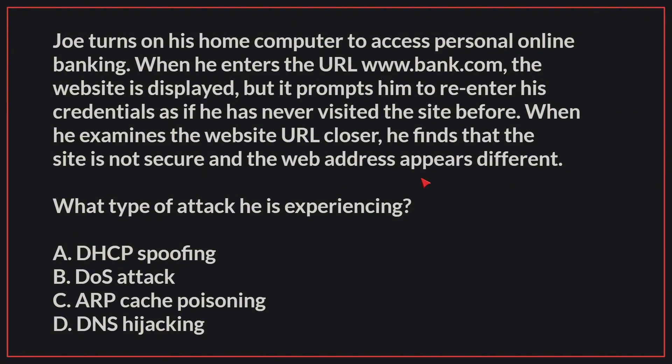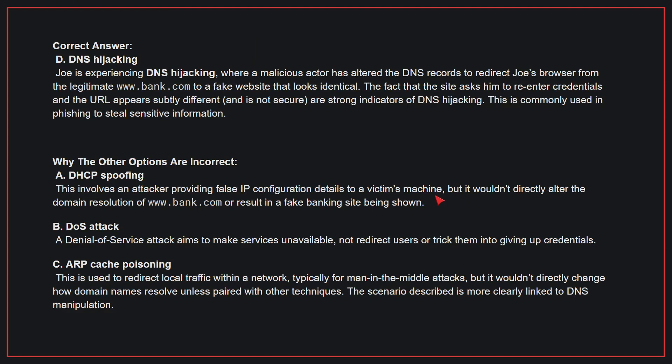The correct answer is D: DNS hijacking. Joe is experiencing DNS hijacking, where a malicious actor has altered the DNS records to redirect Joe's browser from the legitimate www.bank.com to a fake website that looks identical. The fact that the site asks him to re-enter credentials and the URL appears subtly different are strong indicators of DNS hijacking. This is commonly used in phishing to steal sensitive information.